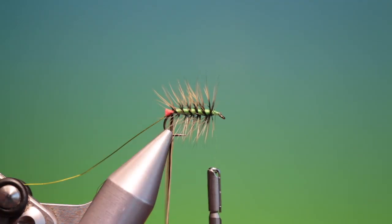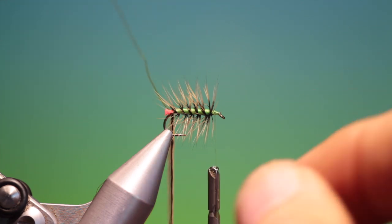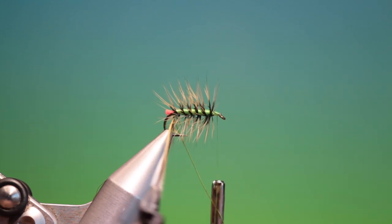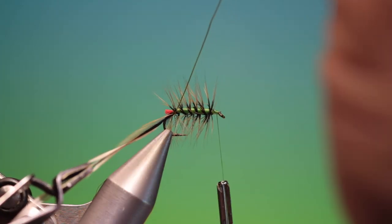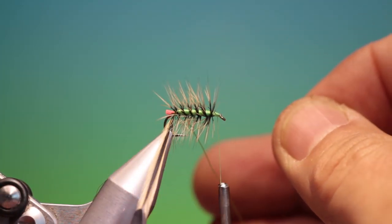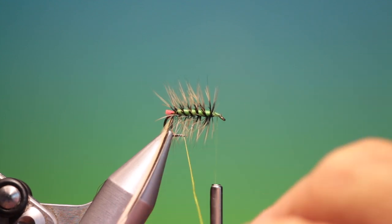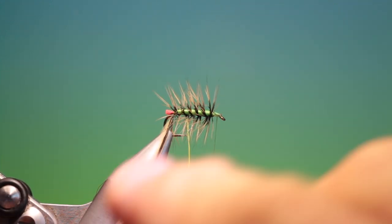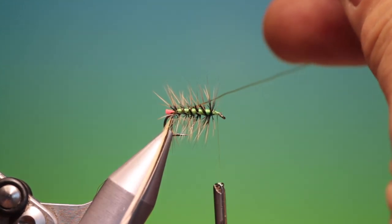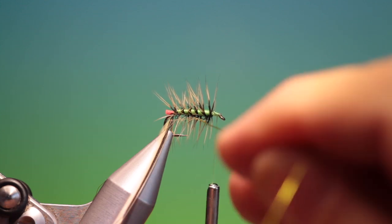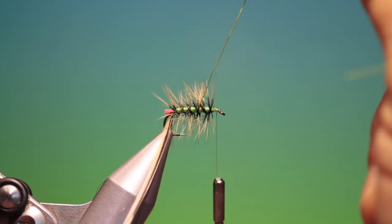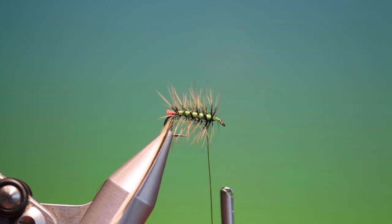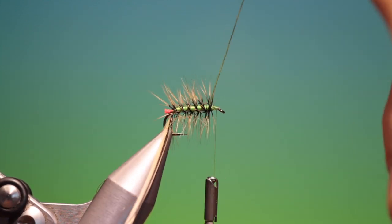We'll take our copper wire and go longer. Catch the hackle in. Remove the hackle plier. Then we can go forward. Even open turns. Securing the hackle as we go. Try not to catch too much hackle fibres down as you go. It's inevitable that you'll catch a few, but try and make it as little as possible.